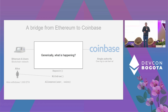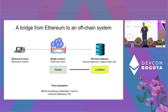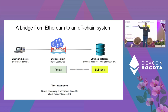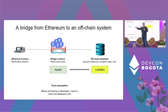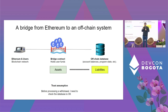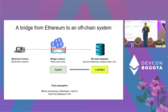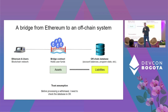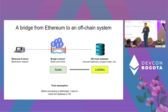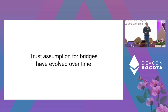Generically speaking, there's this off-chain database that records account balances, program state, smart contract code — everything a database should have. Most importantly, it records the liabilities of the system: if you have 10 coins in the database, you're owed 10 coins from the bridge. The bridge holds the assets, and the whole point of rollups or layer 2 systems is to guarantee that the assets in the bridge can cover the liabilities.